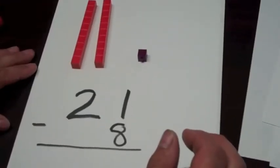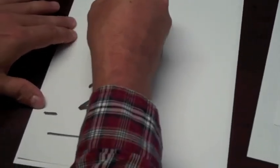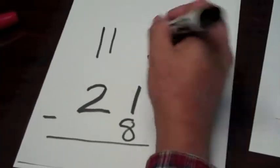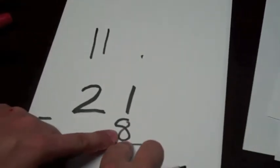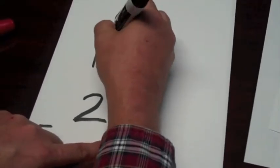Let's subtract eight from twenty-one. Two tens, one one. I need to get eight away from here. I can't. I need to regroup.